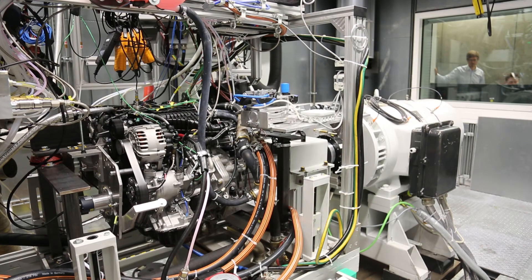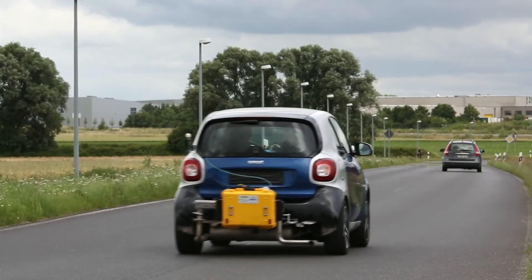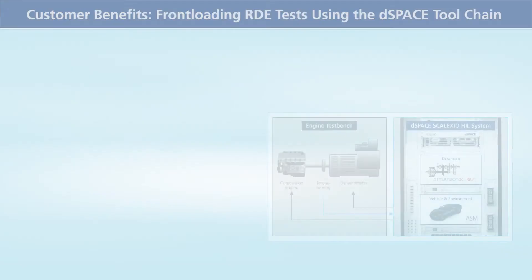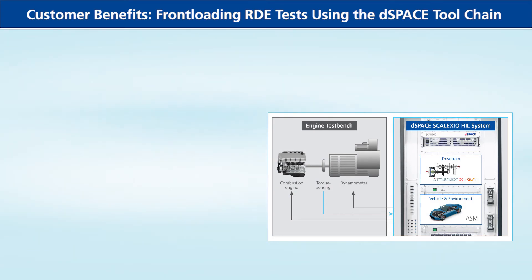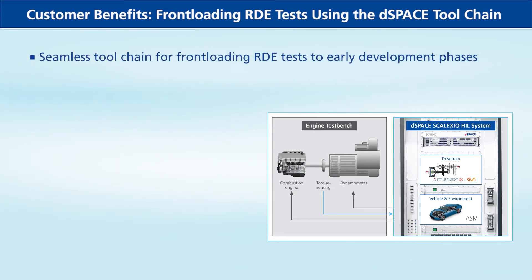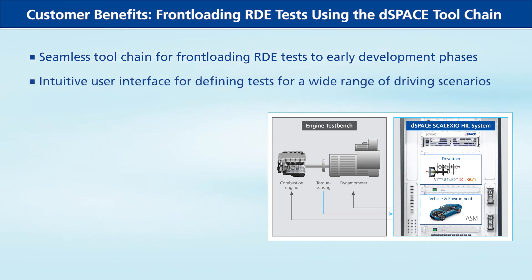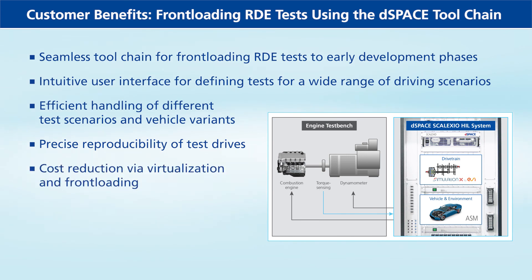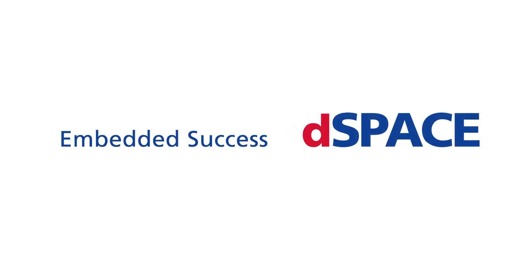The connection between real-time simulator and test bench makes it possible to detect deviations from the emission limits during development and to reduce them early and economically. Customer benefits include: front-loading RDE tests using the D-Space toolchain, a seamless toolchain for front-loading RDE tests to early development phases, an intuitive user interface for defining tests for a wide range of driving scenarios, efficient handling of different test scenarios and vehicle variance, precise reproducibility of test drives, and cost reduction via virtualization and front-loading.